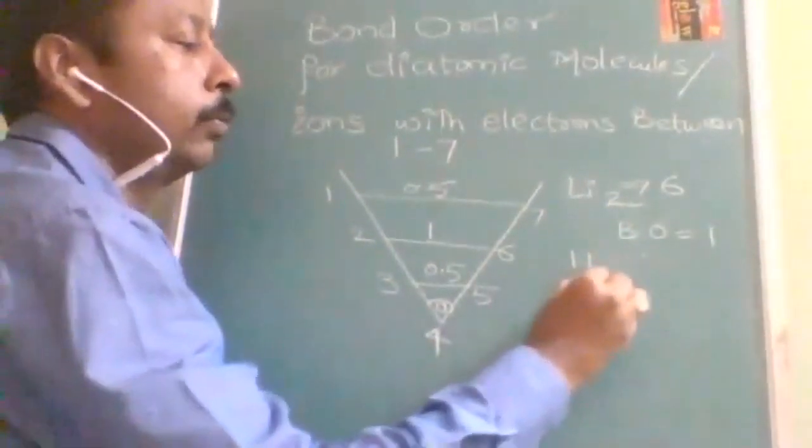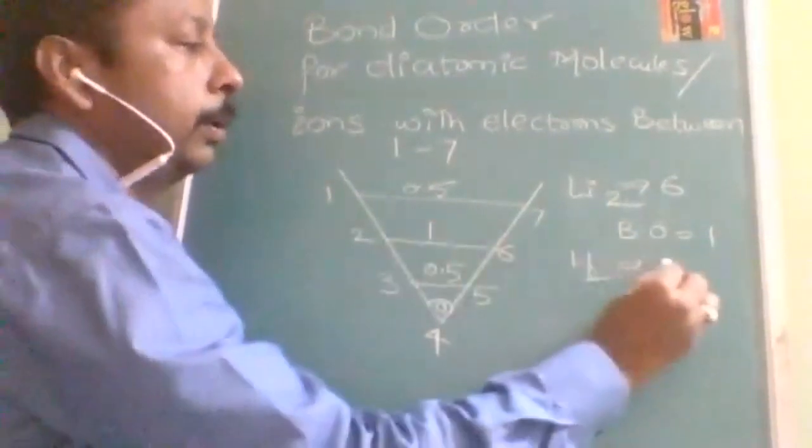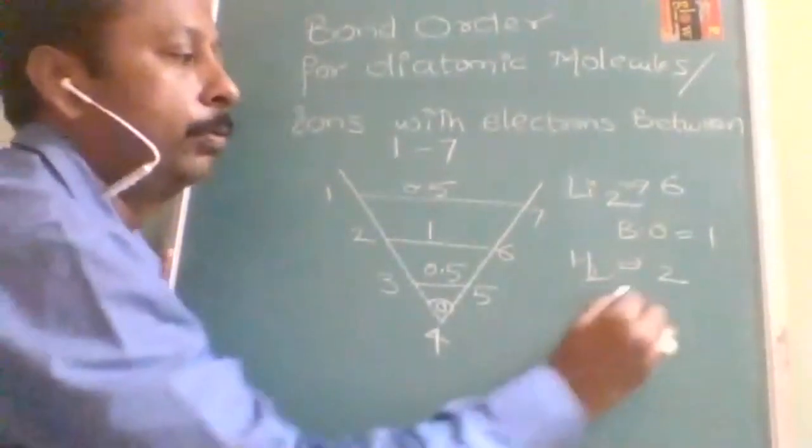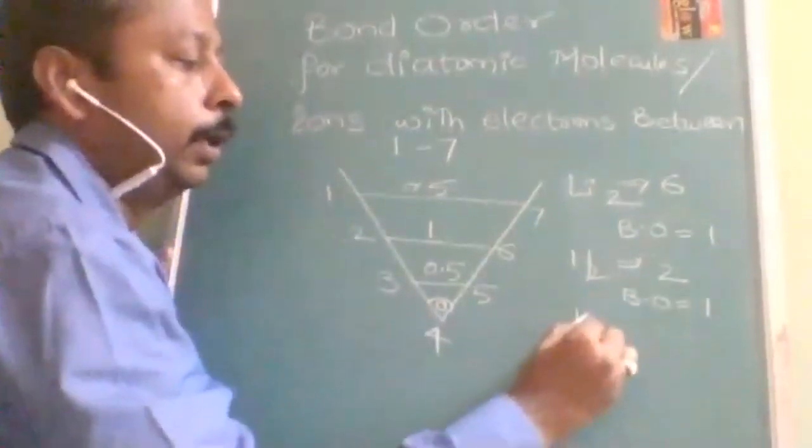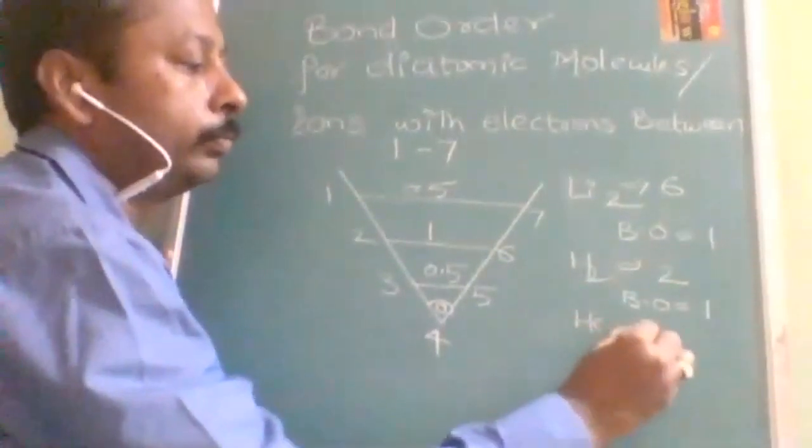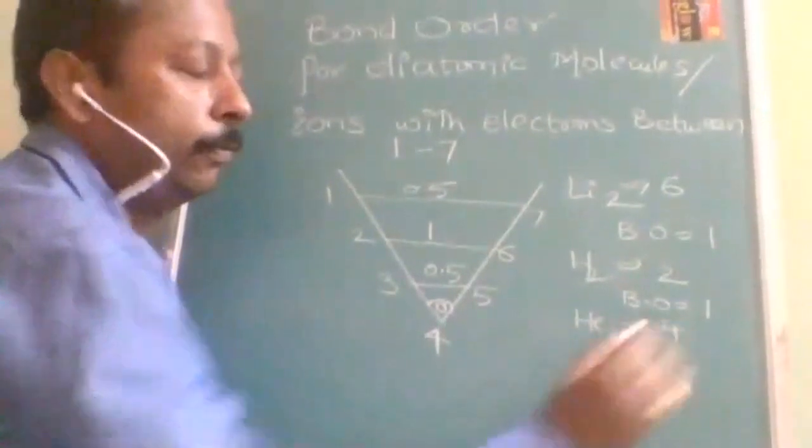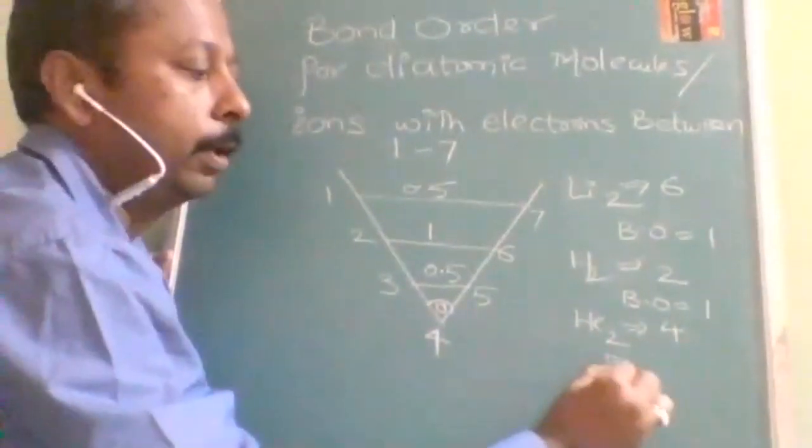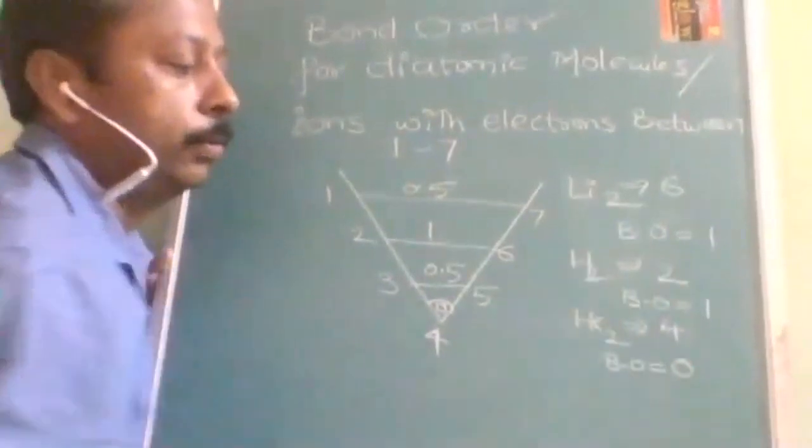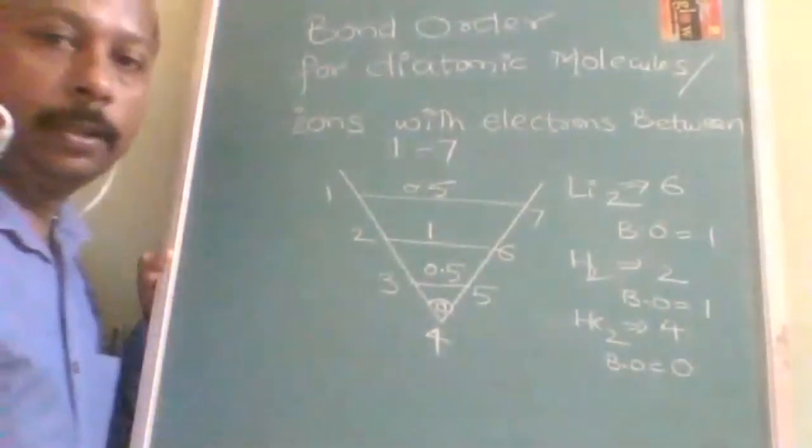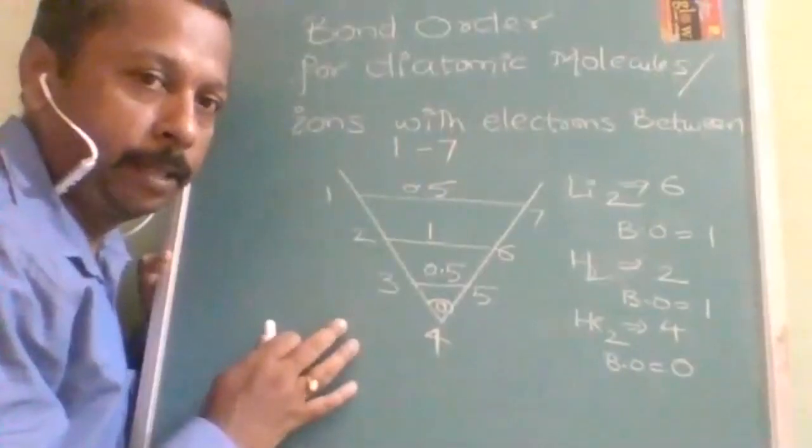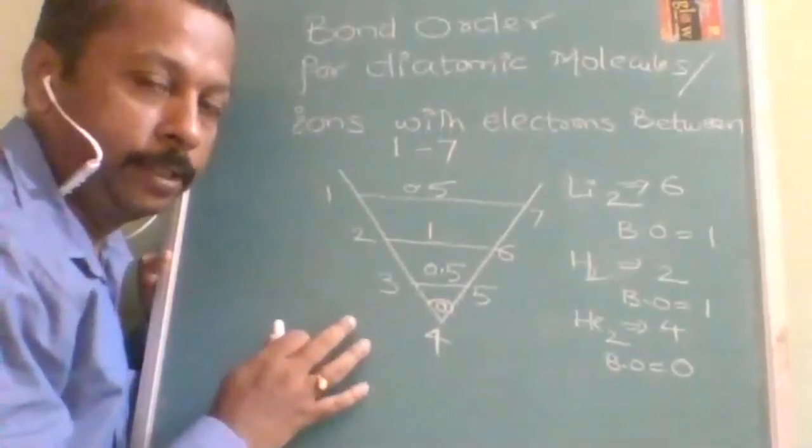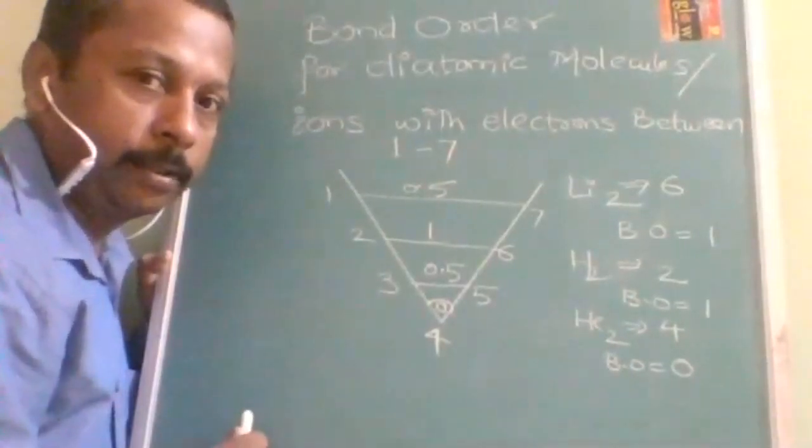Let it be H2 also. H2 also, number of electrons will be 2 and bond order is going to be 1. Let we take He2. So here it will be 4 electrons. So bond order is going to be how much? 0. Bond order is going to be 0. Like this we can make a magic and make you a winner, make you VJ in every examination. Understood?